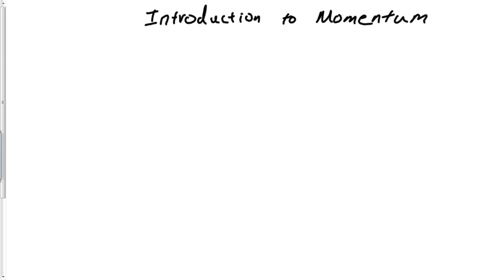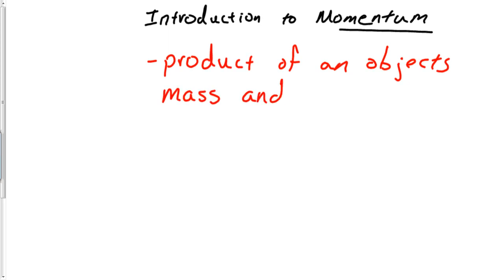What does it take to have momentum? Let's give a vocabulary definition here. Momentum is nothing but the product of an object's mass and velocity.